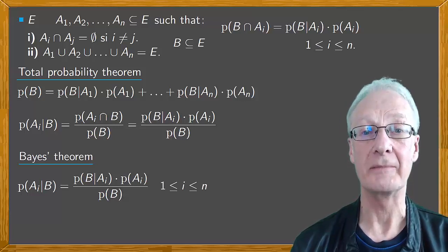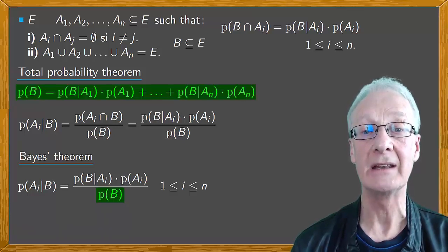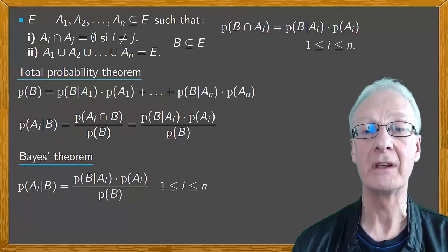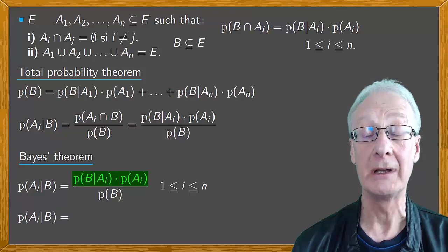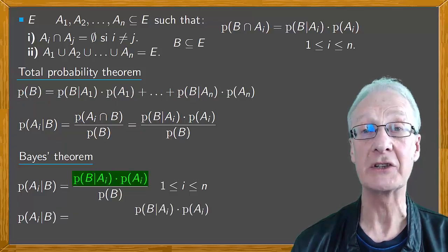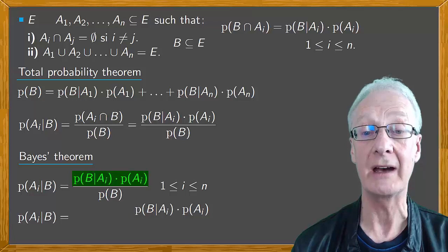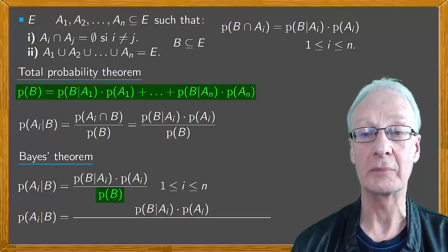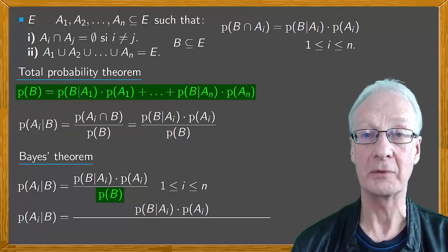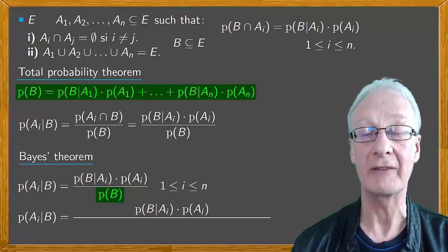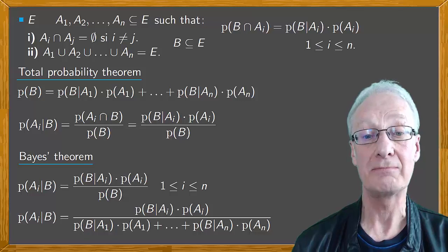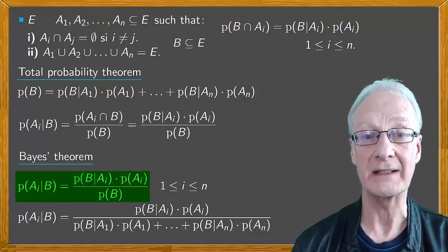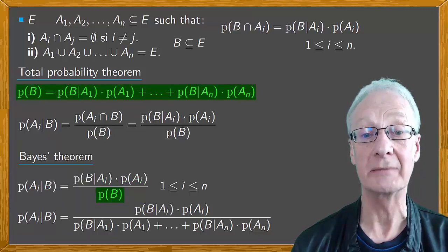Sometimes in Bayes' Theorem, in the denominator, they include the expression for the probability of B obtained from the Total Probability Theorem. So we'd have: the probability of Ai conditional on B equals the probability of B conditional on Ai times the probability of Ai, divided by the total probability expression. I personally prefer the first expression, and in any case I know that the denominator can be calculated by applying the Total Probability Theorem.